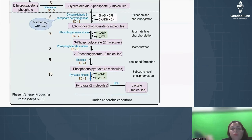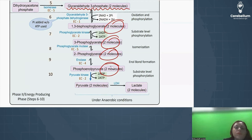Now in phase 2, everything is 2. Why? Because we are going to start with two molecules of glyceraldehyde 3-phosphate. So everything is 2 in phase 2.